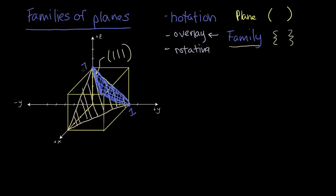So this plane intersects the y-axis at 1, the z-axis at 1. And if I was to change my coordinates to using this system, the plane intersects the x-axis at minus 1. So this plane is the 1-bar-1-1 plane.